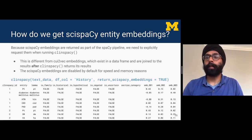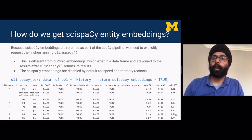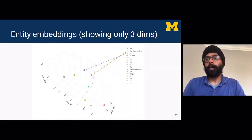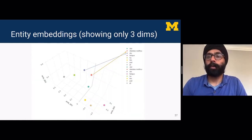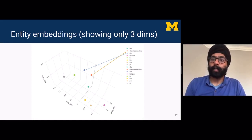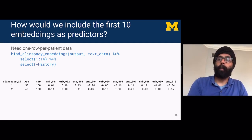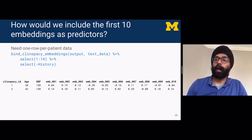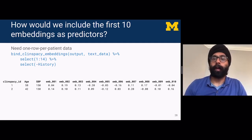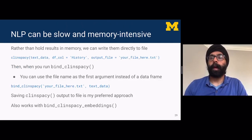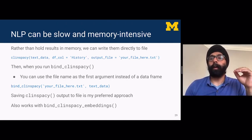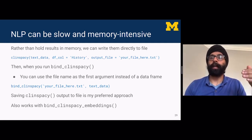Because SciSpaCy embeddings are returned as part of the spaCy pipeline, you need to explicitly request them by setting return_scispacy_embeddings to TRUE when running clinspacey. The first three of 200 embeddings are displayed, rounded to two digits. They are turned off by default for speed and memory reasons. Even though DM and diabetes mellitus were assigned separate UMLS codes, in the entity embedding space they are actually fairly close to one another. The bind_clinspacey_embeddings function lets you include embeddings as predictors and join results back to the original file for one-row-per-patient data.